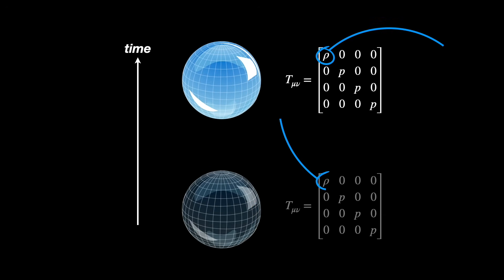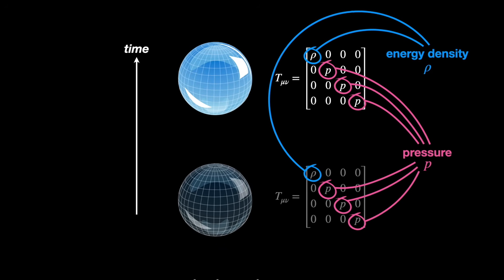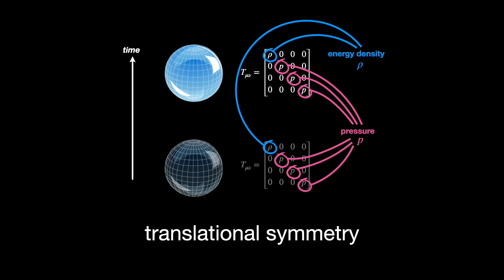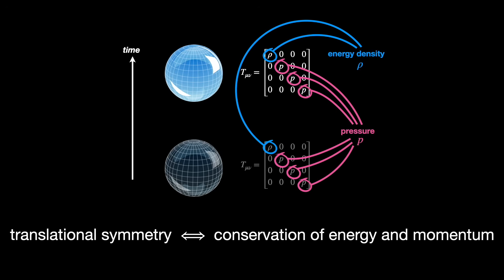The energy density rho is constant. The pressure P is the same in all spatial directions. This uniformity gives us something very powerful, translational symmetry. According to Noether's theorem, the symmetry leads to conservation of energy and momentum.